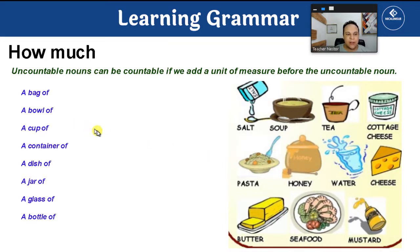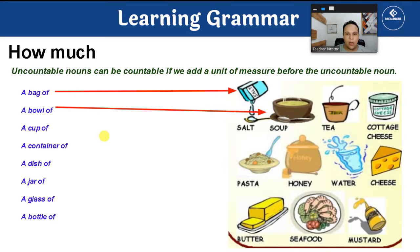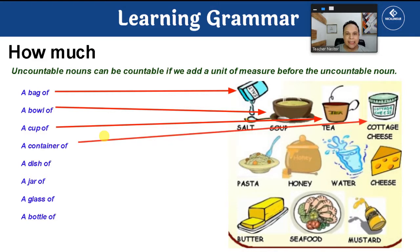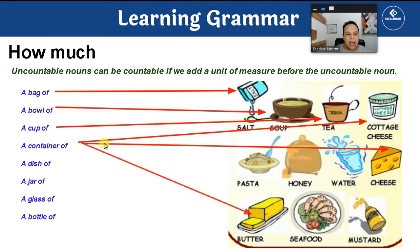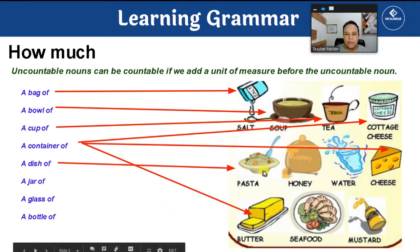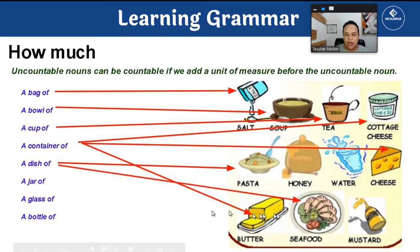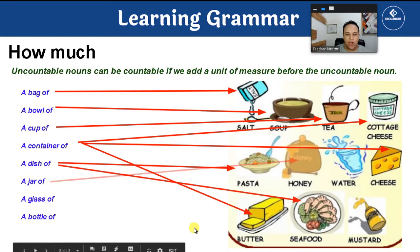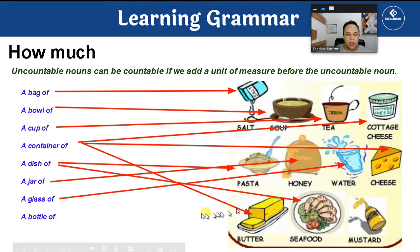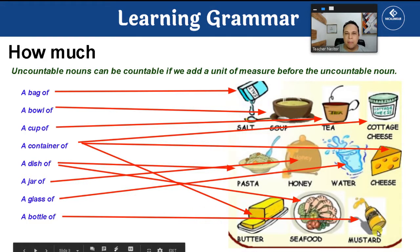Let's take a look at the following examples: a bag of salt, a bowl of soup, a cup of tea, a container of cottage cheese, a container of cheese, a container of butter, a dish of pasta, a dish of seafood, a jar of honey, a glass of water, and a bottle of mustard.